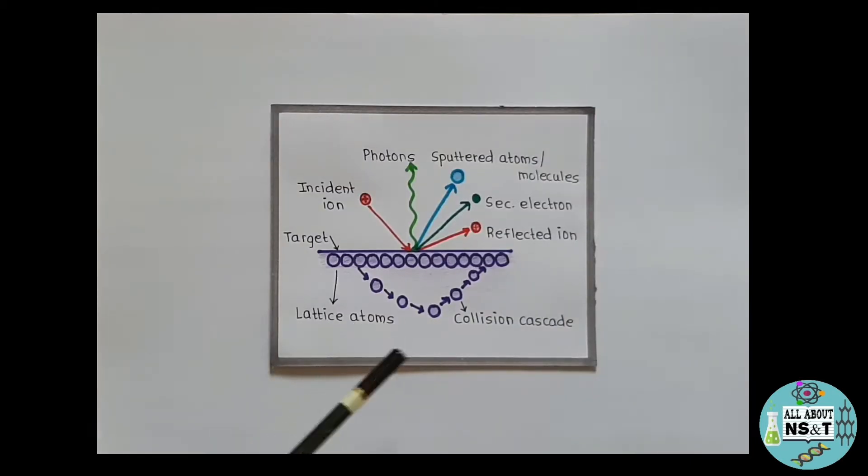As you can see here, this picture shows various possibilities that take place during interaction of ion with target. Depending on the energy of ions, ratio of ion mass to that of target atom mass, the ion and target interaction can be a complex phenomena. And as the incident ion hits the target surface, it creates collision cascades in target atoms, create photons, sputter out target atoms or molecules and even secondary electrons, or may even get bounced back, which is this reflected ion. And now with this picture, I think you people must be clear about mechanism behind sputter deposition.